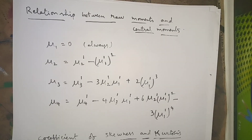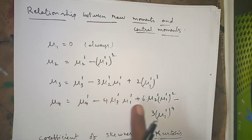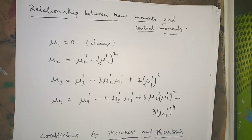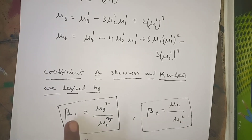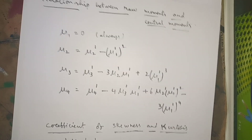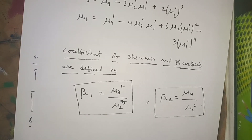Finally, the relationship between raw moments and central moments: mu_1 equals 0 always; mu_2 equals mu_2 dash minus (mu_1 dash)^2; mu_3 and mu_4 have their respective formulas. Using these, find the first four central moments mu_1, mu_2, mu_3, mu_4. From these you can compute the coefficient of skewness: beta_1 equals mu_3 squared divided by mu_2 cubed; and kurtosis: beta_2 equals mu_4 divided by mu_2 squared.